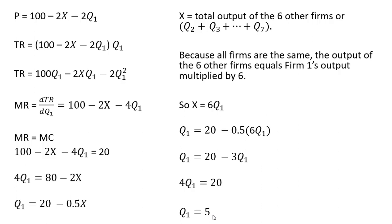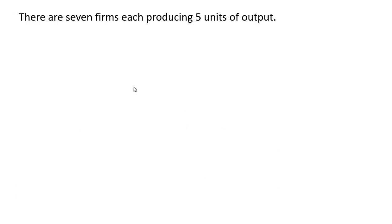And since all firms are the same, firm 2 will produce 5 units of output. Firm 3 will produce 5 units of output and so on. So there are 7 firms each producing 5 units of output.